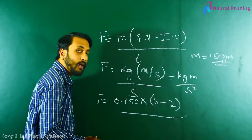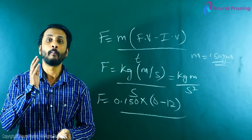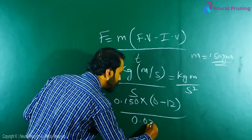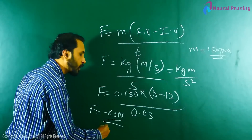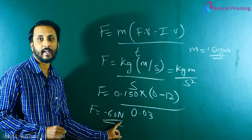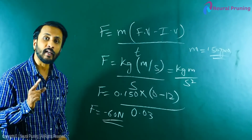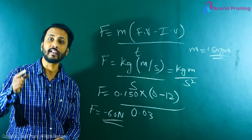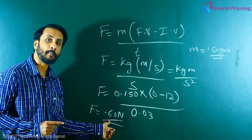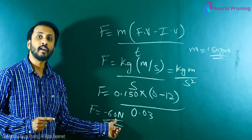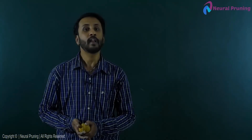So the force is: 0.150 × (0 − 12) / 0.03 = −60 Newton. It is minus 60 Newton because when the batsman hits the ball in the air it travels in the x-direction, and when it comes back to the fielder it is in the minus-x direction. Such a force is called a retarding force. So the force applied when you take a catch in the wrong way is 60 Newton (retarding force).